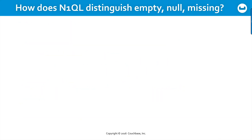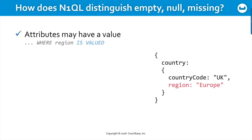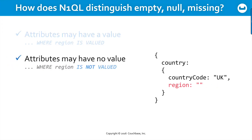Now let's consider the difference as to whether an attribute has a value, exists but has no value, is missing entirely, or is affirmatively marked null. First, a given attribute in a given document may have an explicit value — for example, the region is Europe — and in Nickel you can query explicitly around this, filtering a select statement specifically where a particular attribute does have a value assigned to it, as well as where it has a particular value. You can also query in Nickel where an attribute exists but has no value — either a double quote or a missing value entirely would both respond to a filter testing if region is not valued — meaning you can select based on the non-existence of a value for a specified attribute.